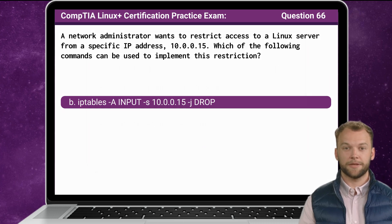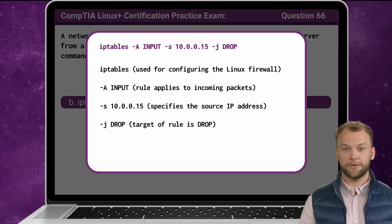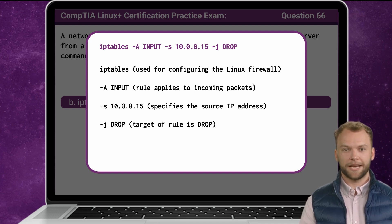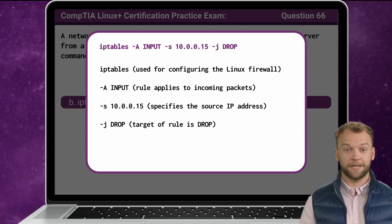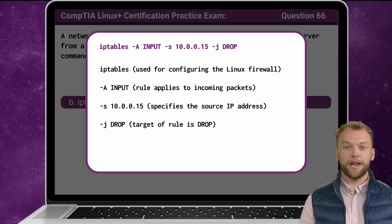The answer is B. The iptables command is used for configuring the Linux firewall, allowing administrators to manage network traffic by defining rules and policies. The -A INPUT option specifies that the rule being added applies to incoming packets, appending the rule to the end of the input chain. The -s option specifies the source IP address, in this case 10.0.0.15. Finally, the -j DROP option specifies the action to take if the conditions are met, instructing the firewall to discard any incoming packets from the specified source IP address.